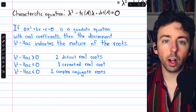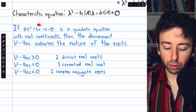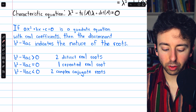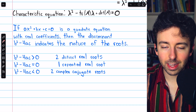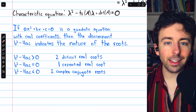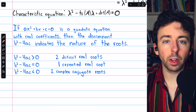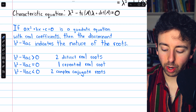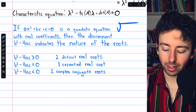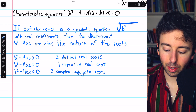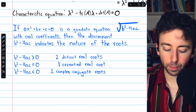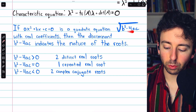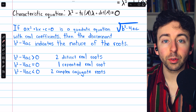Recall from algebra how the discriminant of a quadratic equation, b² − 4ac, indicates the nature of the roots. This is the part that appears underneath the square root in the quadratic formula, and that's what we call the discriminant.